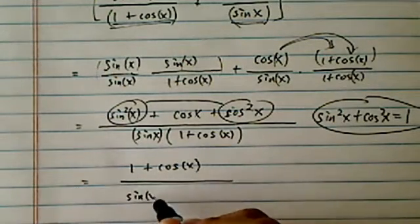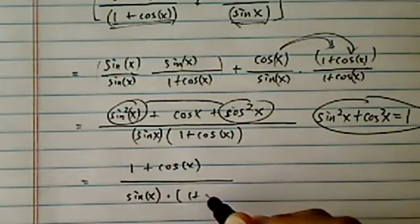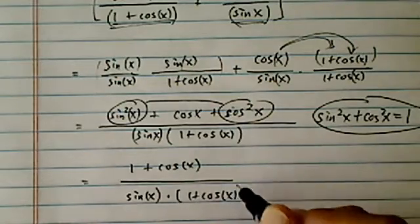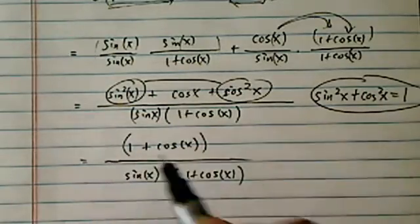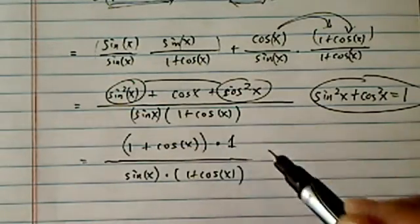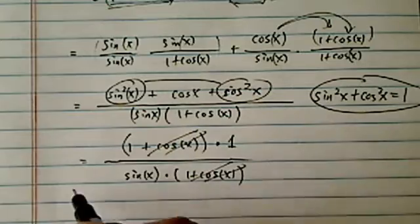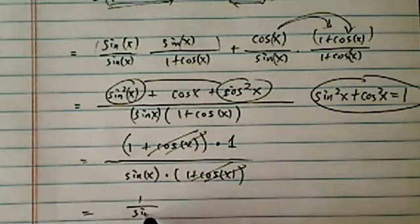And I have a sine x on the bottom, multiply 1 plus cosine x. You treat this thing as a 1 term by itself, multiply 1, this whole thing cancels. Then you have 1 over sine x.